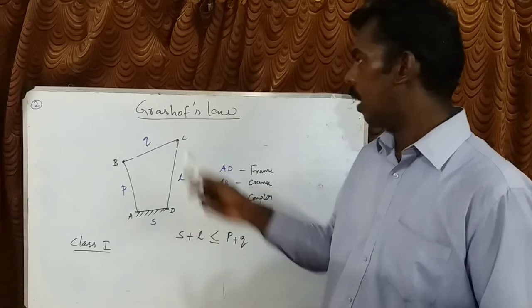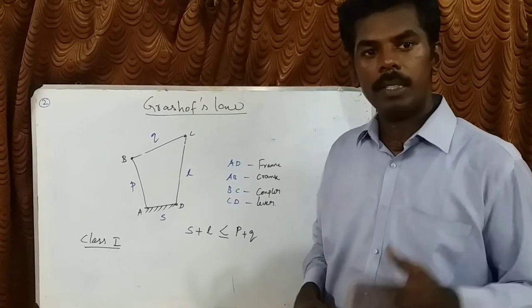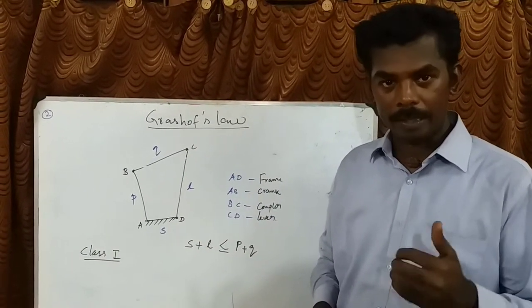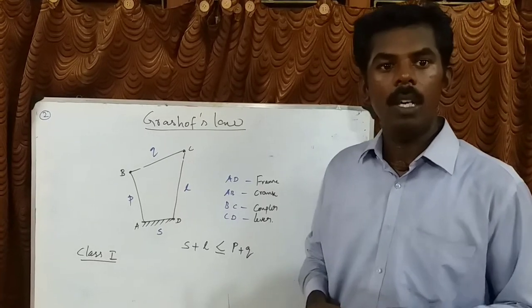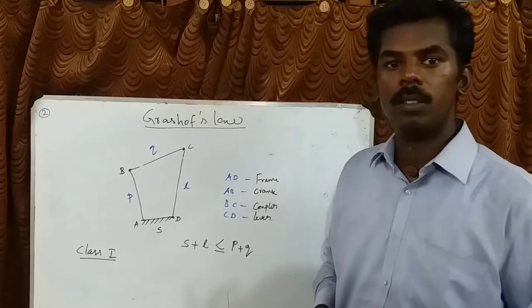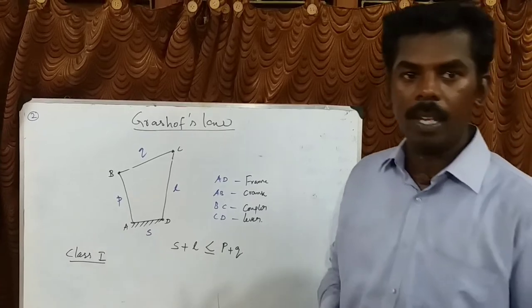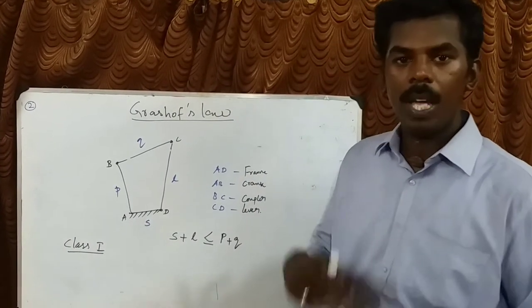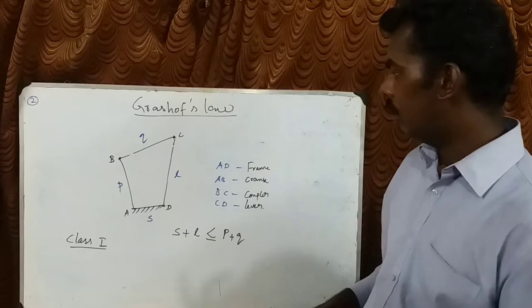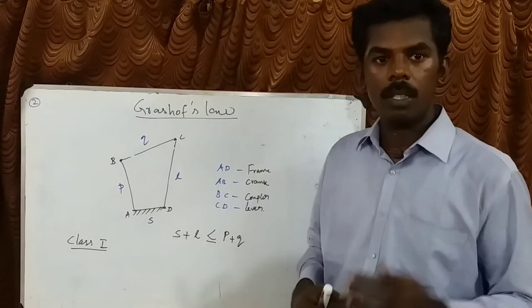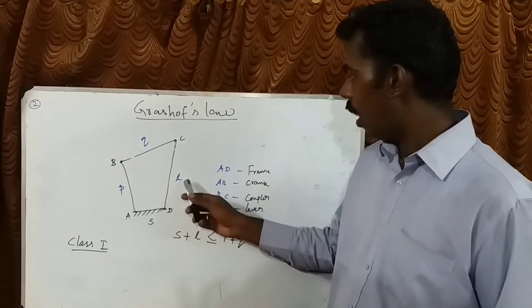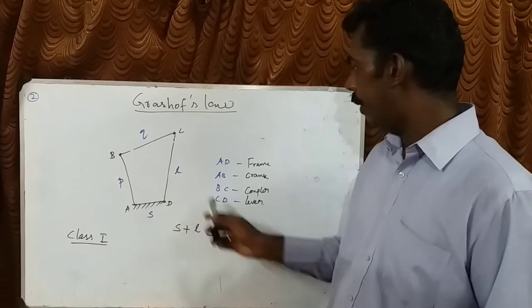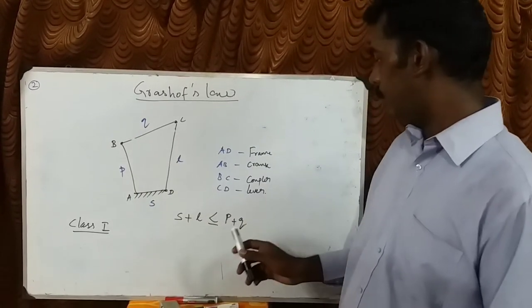Next, we discuss Grashoff's law. Grashoff's law states that a 4-bar mechanism has at least one revolving link if the sum of the largest and shortest link is less than the sum of the lengths of the other two links. That is, S plus L must be less than P plus Q.